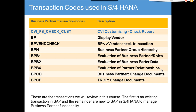The next one is the BP vendor check transaction, to verify whether replication is done or not. Then there is BPH — Business Partner Group Hierarchy — where you can set up a hierarchy. Next is BPP1, which is evaluation of business partner roles, such as whether it's a supplier, with sub-details like company code details and supplier purchasing details. Then BPB2, which is evaluation of business partner data based on the data entered.